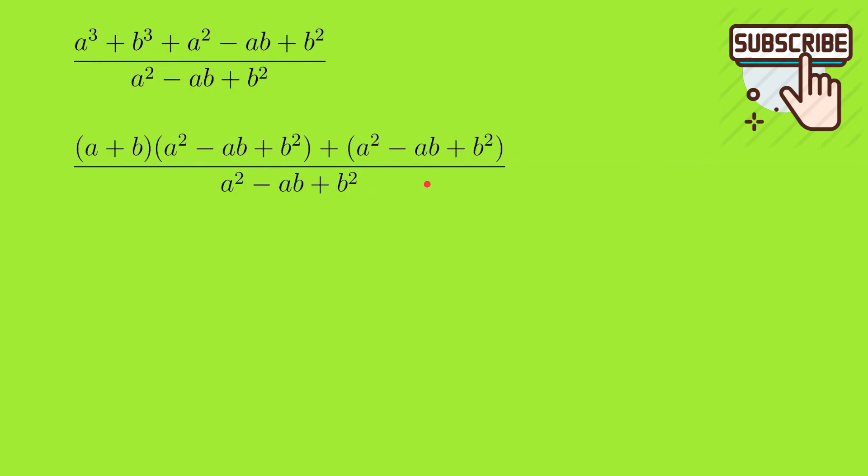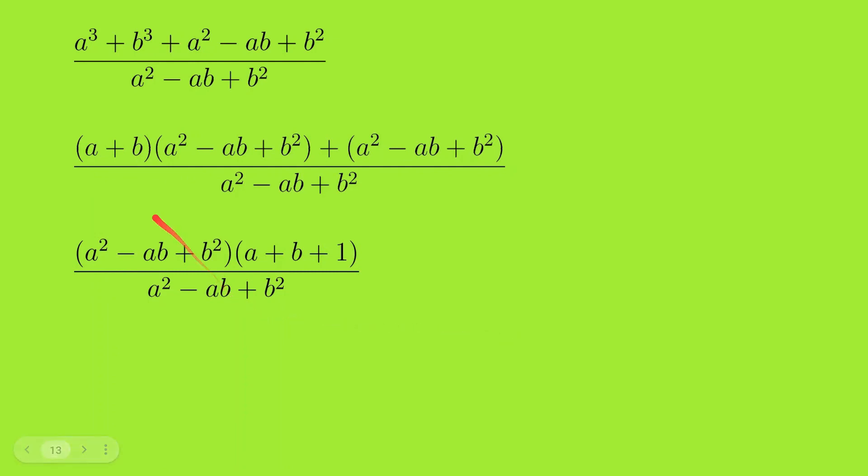We will take (a squared minus ab plus b squared) common, so we will have (a squared minus ab plus b squared) times (a plus b plus 1), divided by a squared minus ab plus b squared. a squared minus ab plus b squared will cancel, and we will be left with a plus b plus 1.